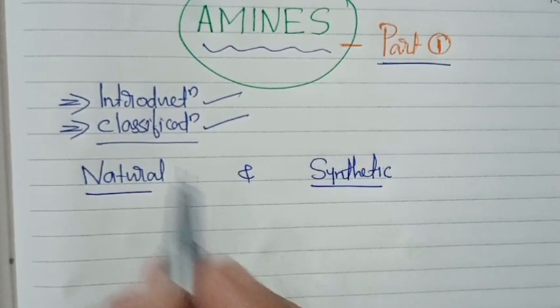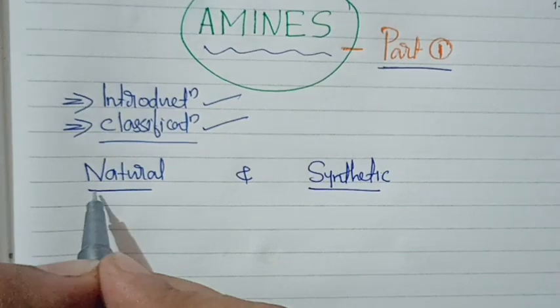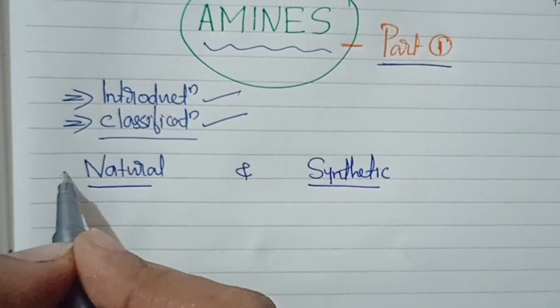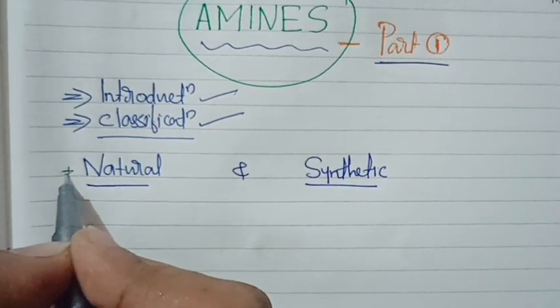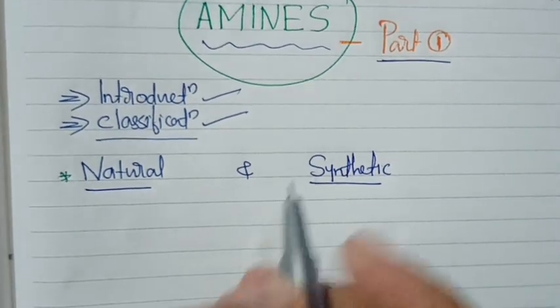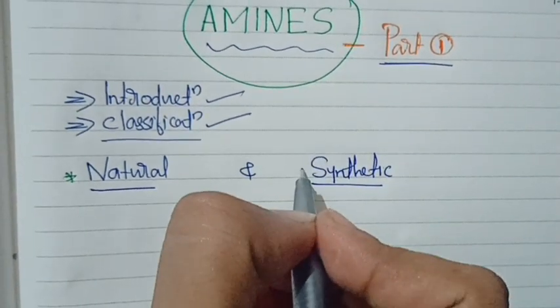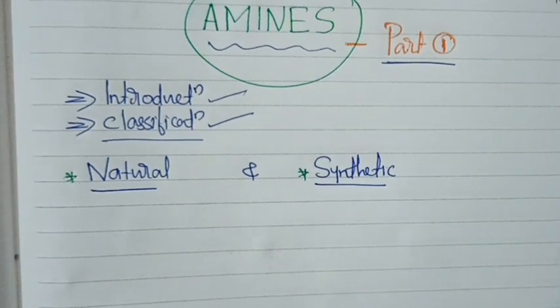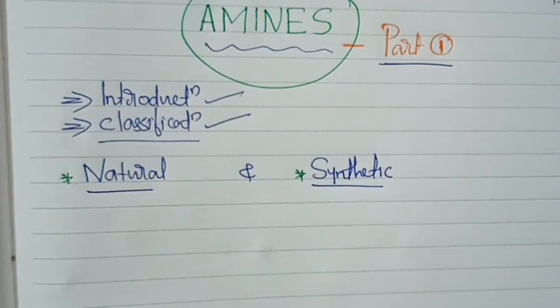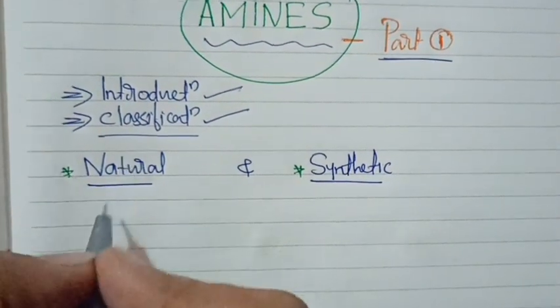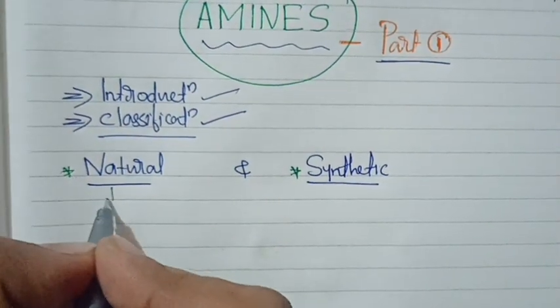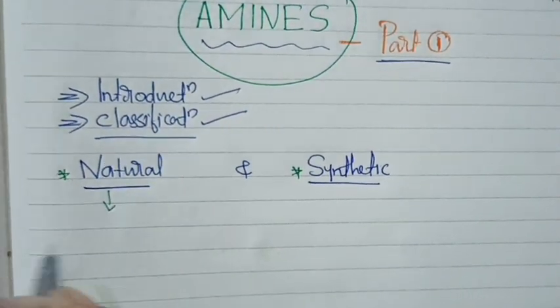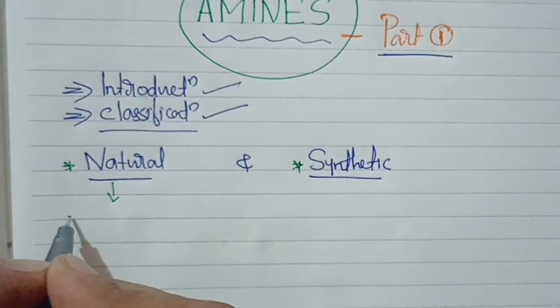There are normally two types of amines. One is natural amines and the other is synthetic amines. Remember: natural and synthetic.